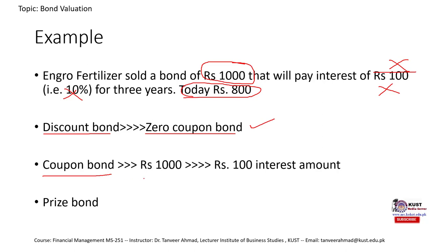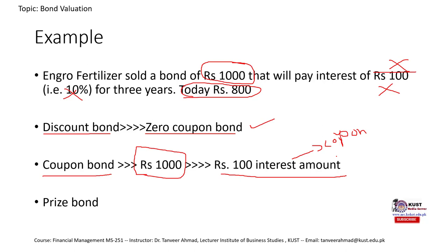We call it a zero coupon bond because there is no coupon — no periodic interest payment. Then there is the coupon bond. For example, if Agro Fertilizer sells a bond at its face value of 1,000 rupees and pays rupees 100 each year as an interest amount, they are paying coupon — so it is a coupon bond. Earnings from a bond come in two ways: either buy low and sell high (zero coupon bond), or receive periodic interest payments (coupon bond).